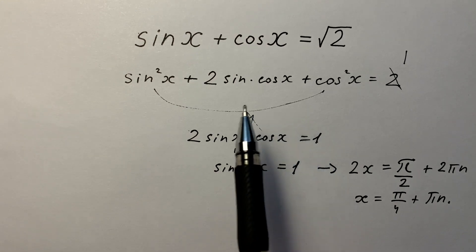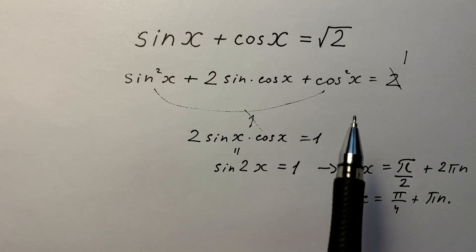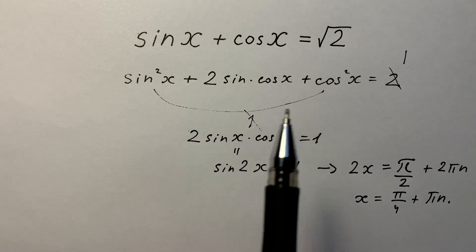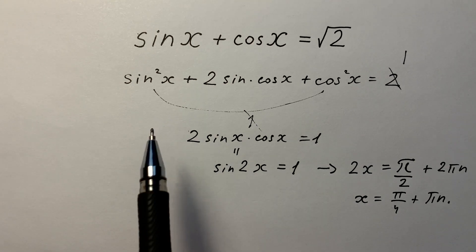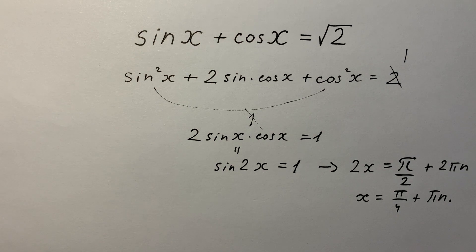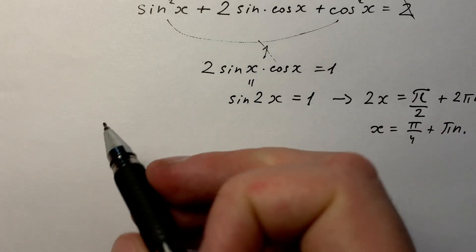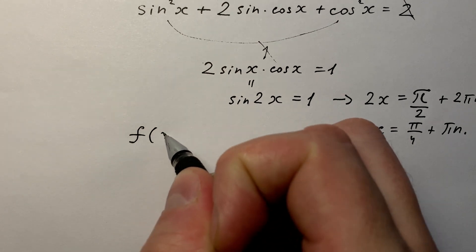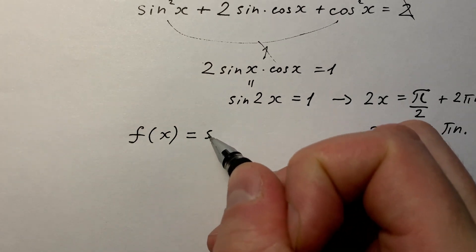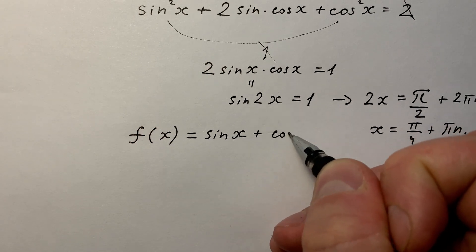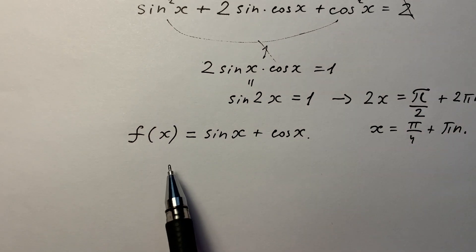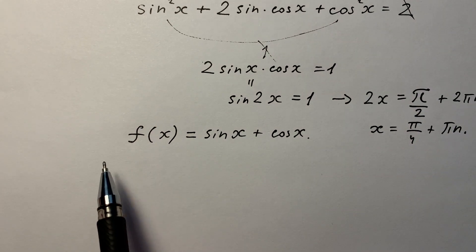At the beginning of the video, I said that there is one feature that you have to remember. Let's write the left side of this equation like a function of x: f(x) = sin(x) + cos(x). Let's analyze it and find the derivative of this function.